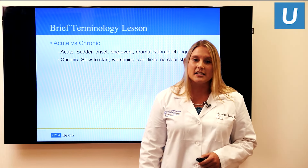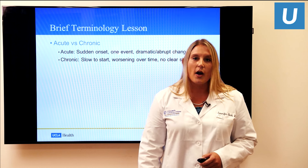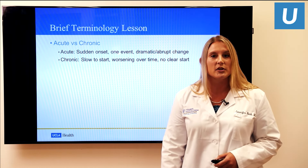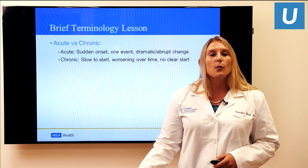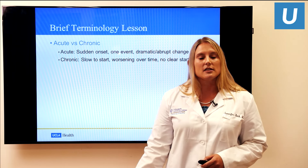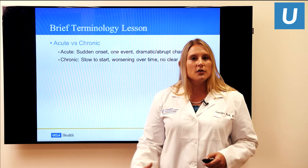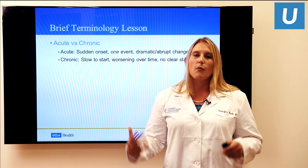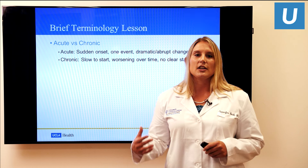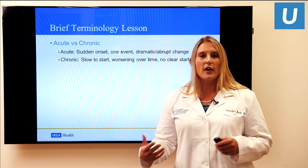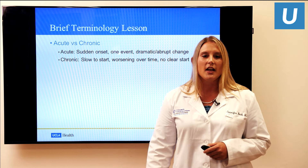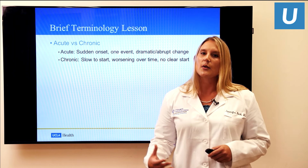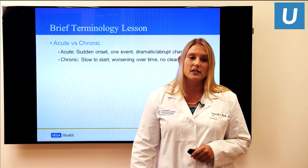A brief terminology lesson: acute versus chronic. Acute is something with very sudden onset — a car accident, running into a pole, twisting your ankle in a hole — usually one dramatic event that abruptly changed how you felt.